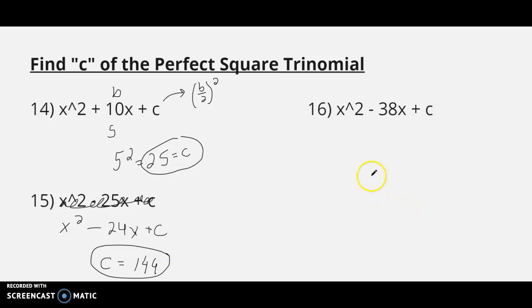Let's look at number 16. There's B, negative 38. Half of that would be negative 19. And if we square it, we will get c. Negative 19 squared, 361.